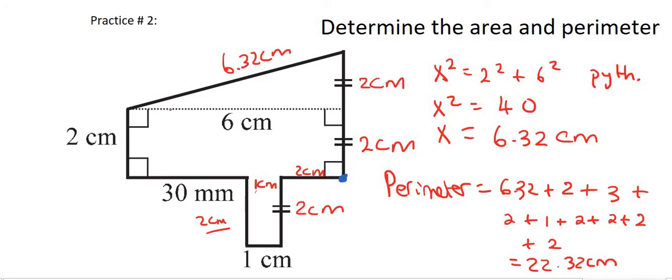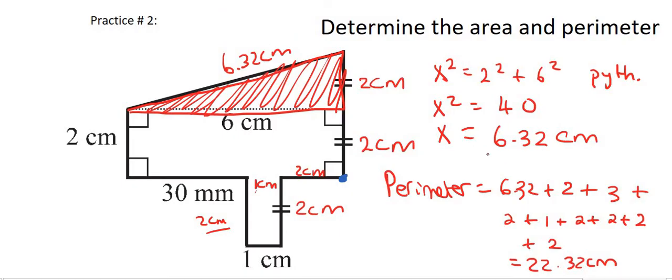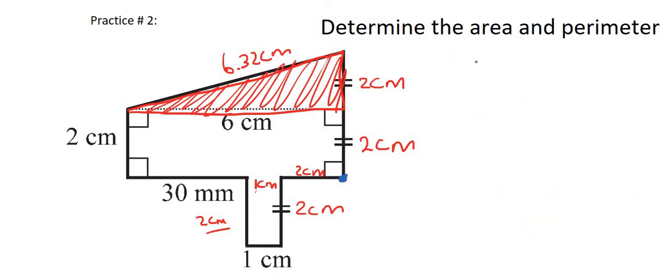What we do instead is we do something quite clever. We break the shape up into various parts. So for example, I'm going to start off with this triangle. And I'm going to work out the area of that one by itself.